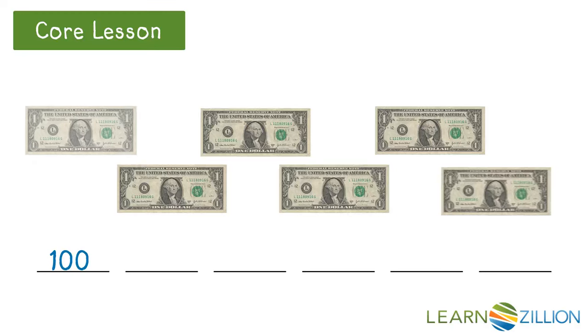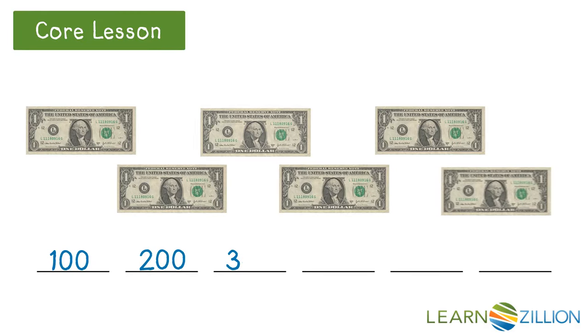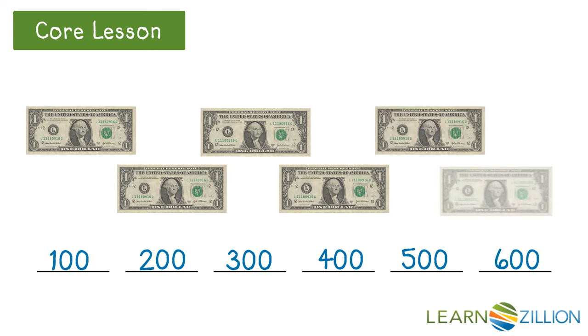One hundred, two hundred, three hundred, four hundred, five hundred, six hundred. Six one dollar bills is worth six hundred cents.